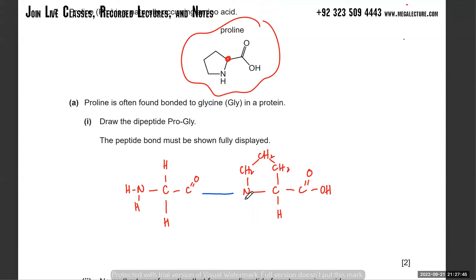We actually drew glycine first and proline second, but they wanted proline first and glycine second - the order should have been the other way around. This should be on the left side and this on the right side, but the same thing will happen - the H will be lost and the OH will be lost and they form a peptide bond. The order was incorrect.